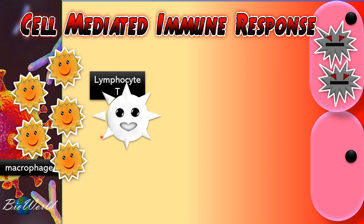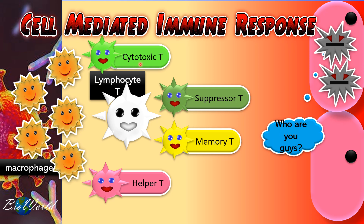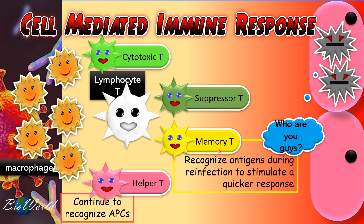When interleukin-2 stimulates the lymphocyte T, the cells that are produced include cytotoxic T, suppressor T, memory T, and helper T. Now we are familiar with the role of the helper T — it will continue to recognize the APCs produced by the macrophages. Memory T is actually what gives us immunity because it is able to recognize pathogens during reinfection. So if this pathogen were to infect five months later, the memory T will be able to stimulate the immune system much faster.